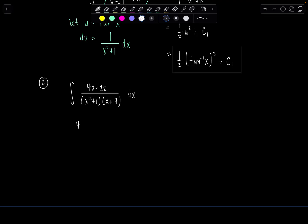Let's find the partial fraction decomposition of the integrand. So we have 4x minus 22 over, everything's fully factored in the denominator. x squared plus 1 is an irreducible quadratic. So that means the decomposition will have the form ax plus b over x squared plus 1, and then just a constant c over that linear factor, x plus 7.